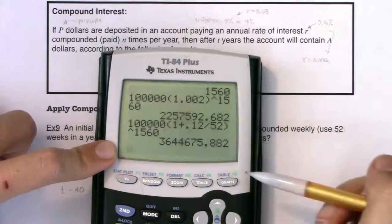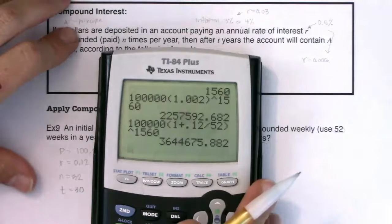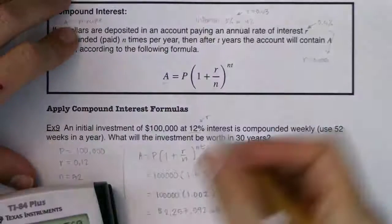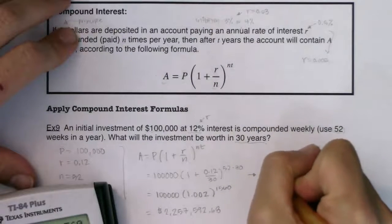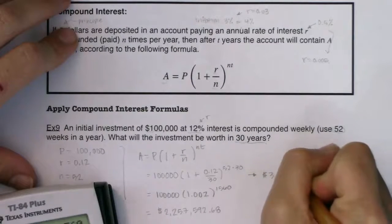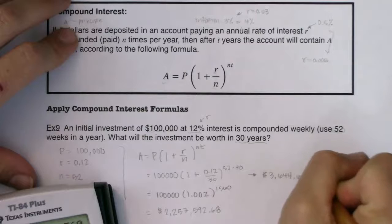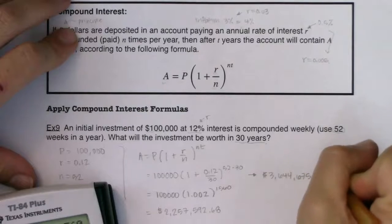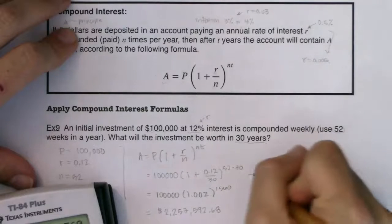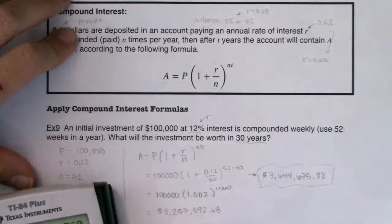Do you see what a difference that non-rounded answer makes? Look, now I'm getting $3,644,675.88.